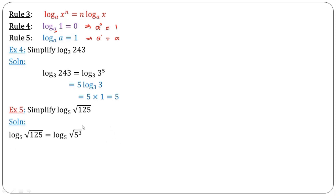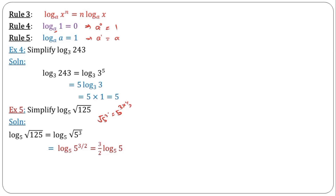For the fifth example, we express root 125 in base 5 since the base of the logarithm is 5. Now 125 is 5 raised to the power of 3, and the square root changes to a power of one-half. So we have the square root of 5 to the power of 3, and the half multiplies 3 to give 3 over 2. We bring that 3 over 2 to the back, and log 5 base 5 equals 1, so 1 times 3 over 2 gives 3 over 2 as the solution.